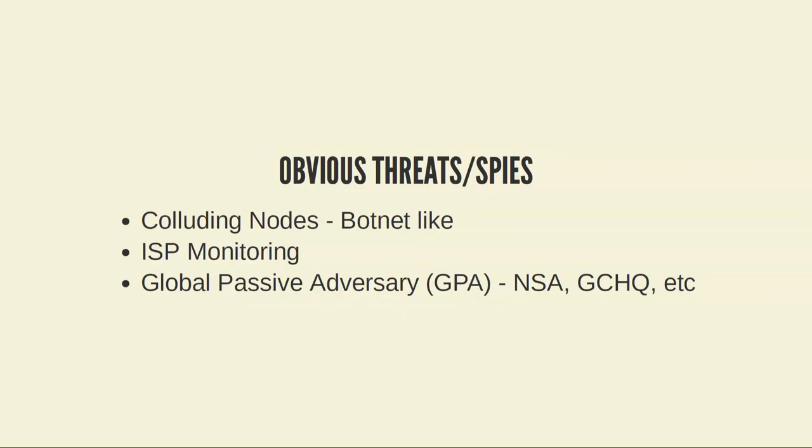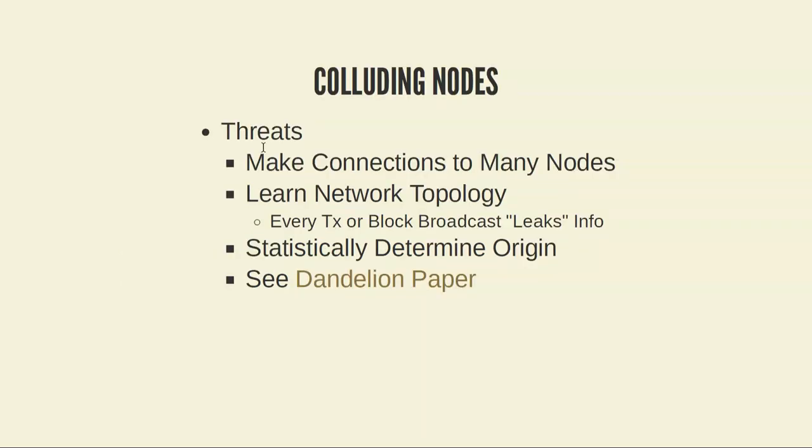There are three main threats we're trying to address. The first is anyone attempting to make many connections throughout the network to infer the possible origin. The second is ISPs passively monitoring your network. The third is anyone able to monitor multiple network points, which enables even more information to be gleaned.